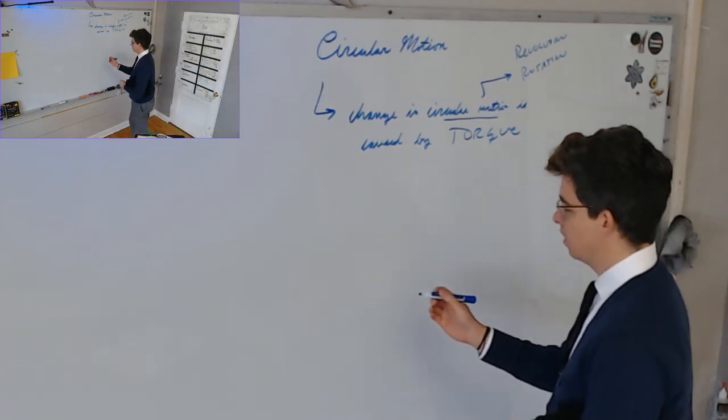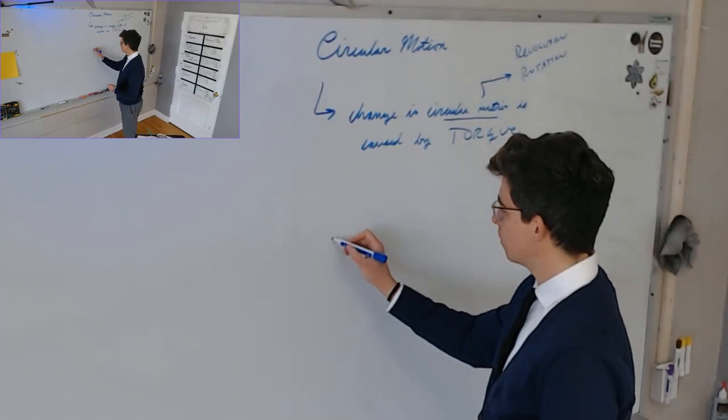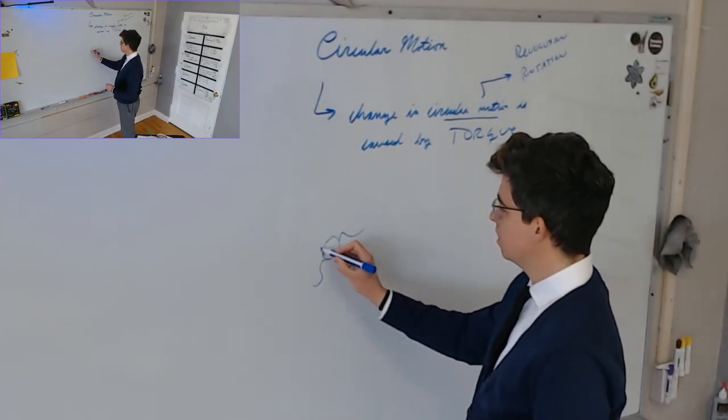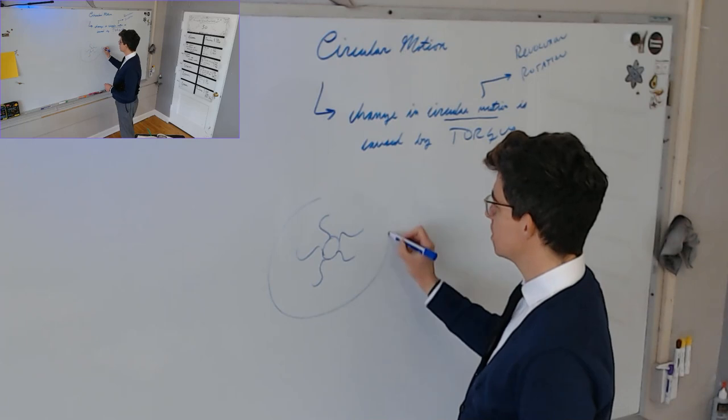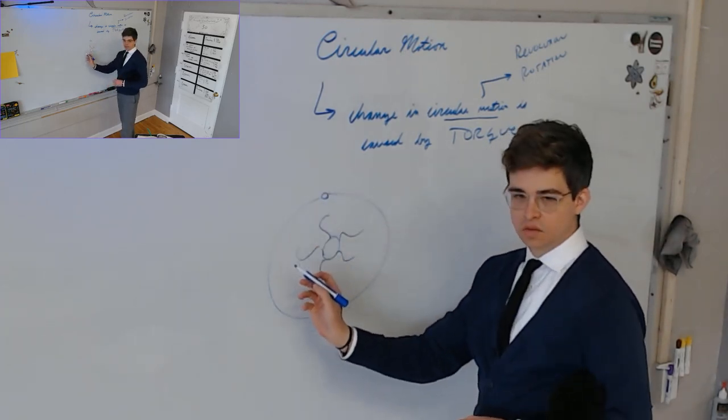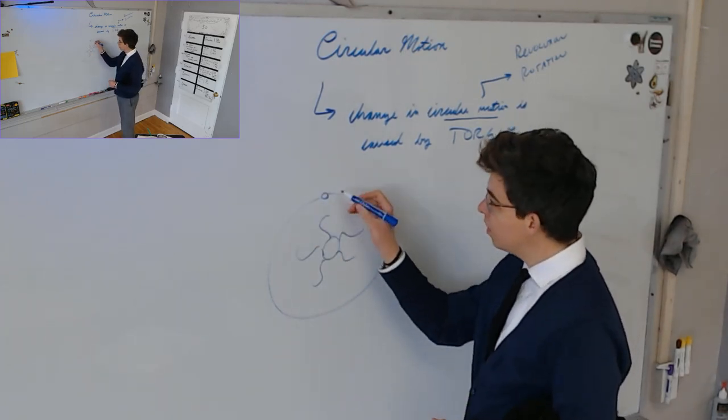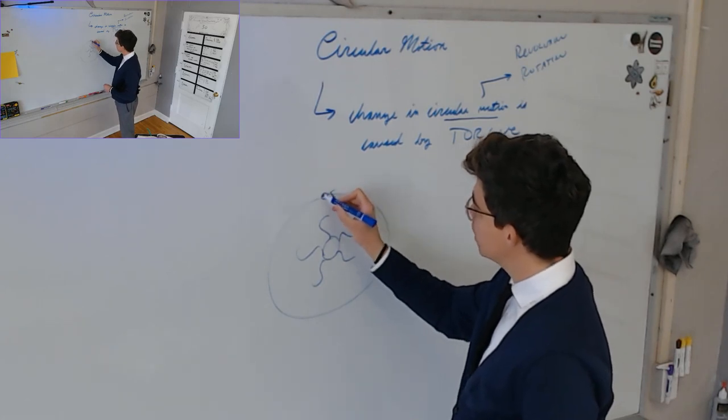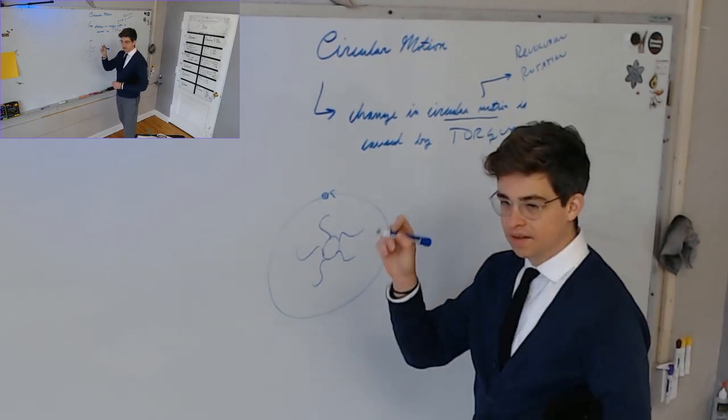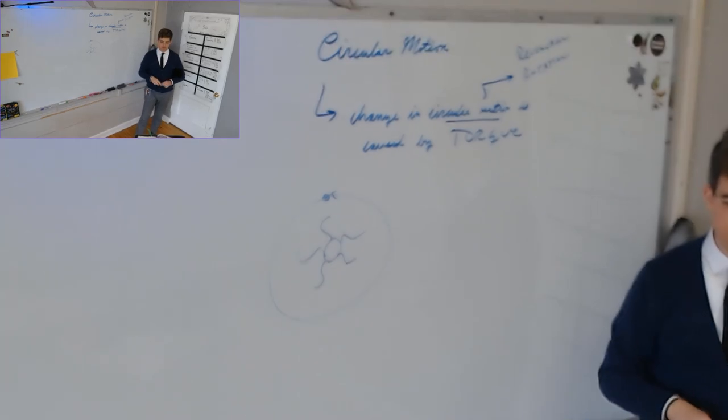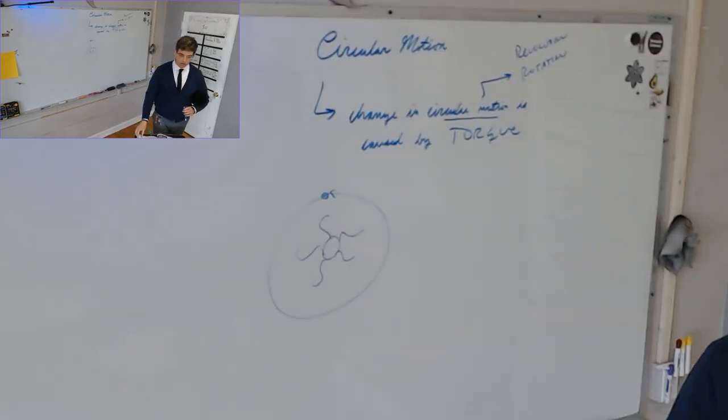So, the Earth around the Sun, here's the Sun, here's the Earth. This orbit is its revolution around the Sun, but it also rotates about its own axis. It itself is spinning and that's a rotation. It's a two in one. It's a double spin. Spin among a spin.